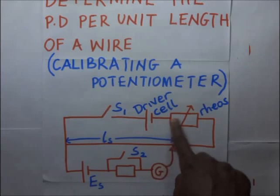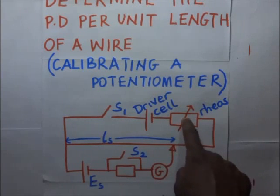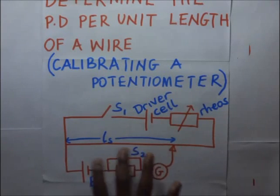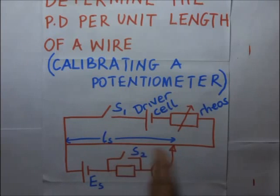After that we adjust the rheostat. We adjust the rheostat while adjusting this jockey with the intention of making sure that our balance point is near or within the middle of this wire. After obtaining a balance point being in the middle of this wire, then we close our switch s2.